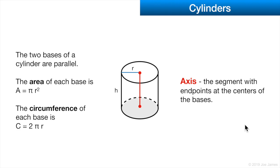Let's talk about cylinders. The two bases of a cylinder are parallel, and therefore they are the same size. The area of each base is π r², that's just the area of a circle, and the circumference of each base is 2π r. The axis of a cylinder is the center rod, a line going straight up the middle of it. We also have a height for the cylinder and a radius.